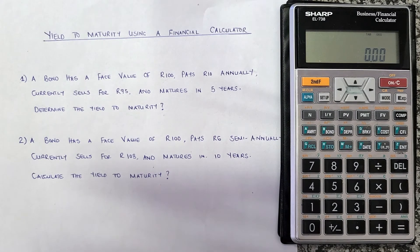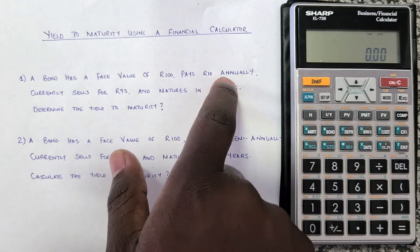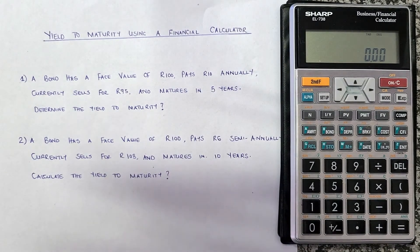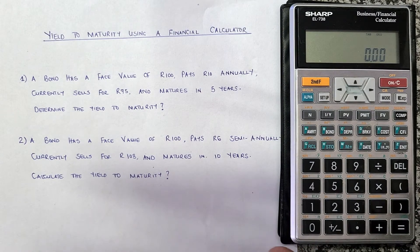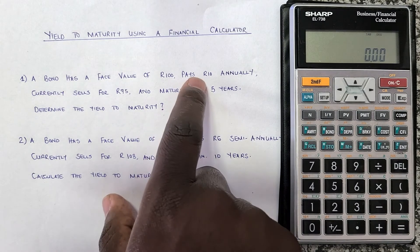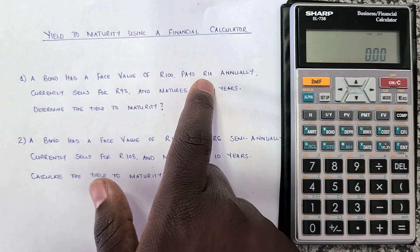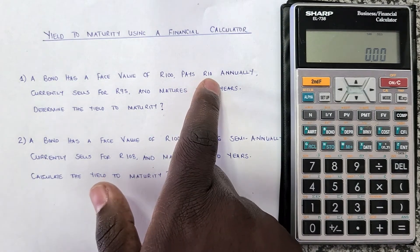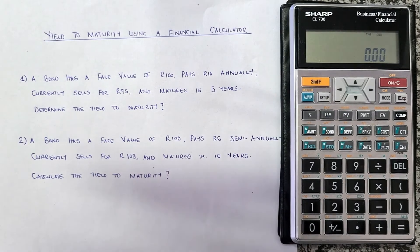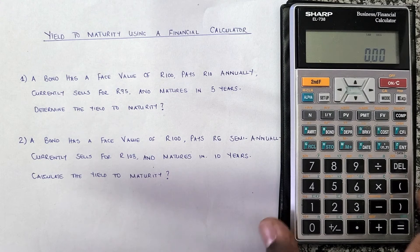One important thing to note is how often the coupon is being paid. We are told it pays 10 rand annually, so we must make sure that the payments per year on our calculator matches the coupon payment frequency. Since it's paid annually, the payments per year should be one.